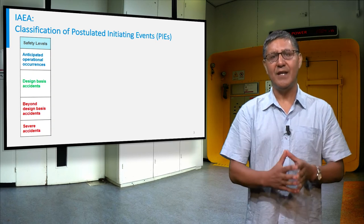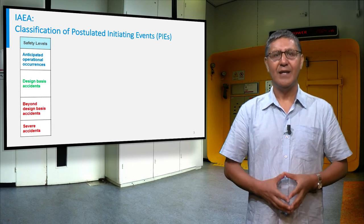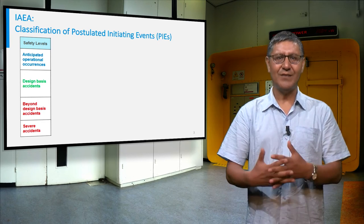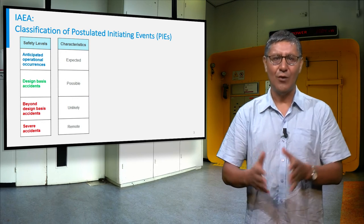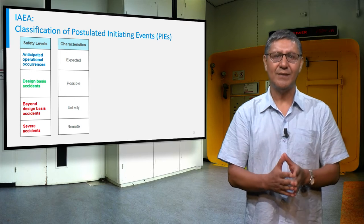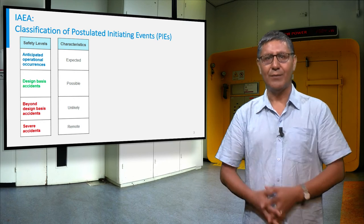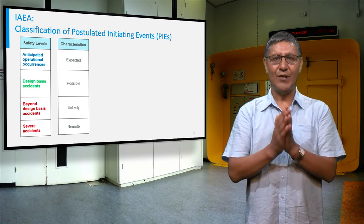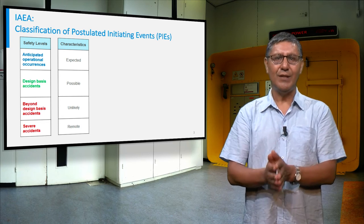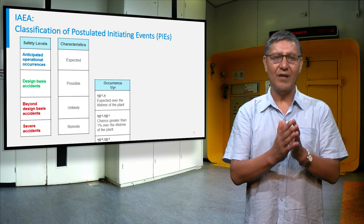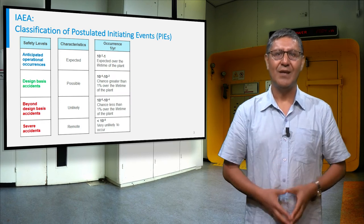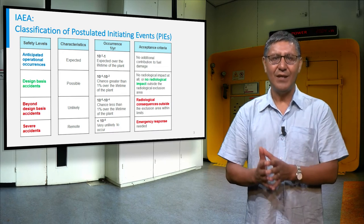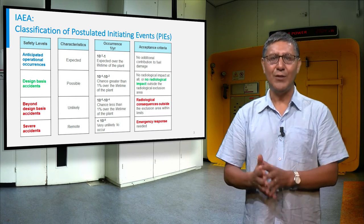According to the EAA, the postulated initiating events can be classified according to the frequency of occurrence, as shown in this table. At each plant state, you will have a certain probability for the occurrence of an event. Finally, you define acceptance criteria for each event category.